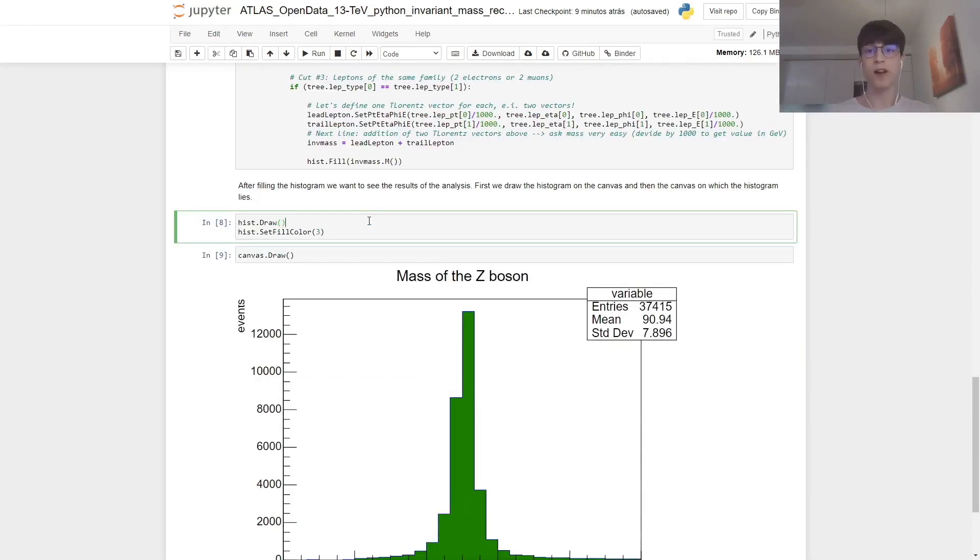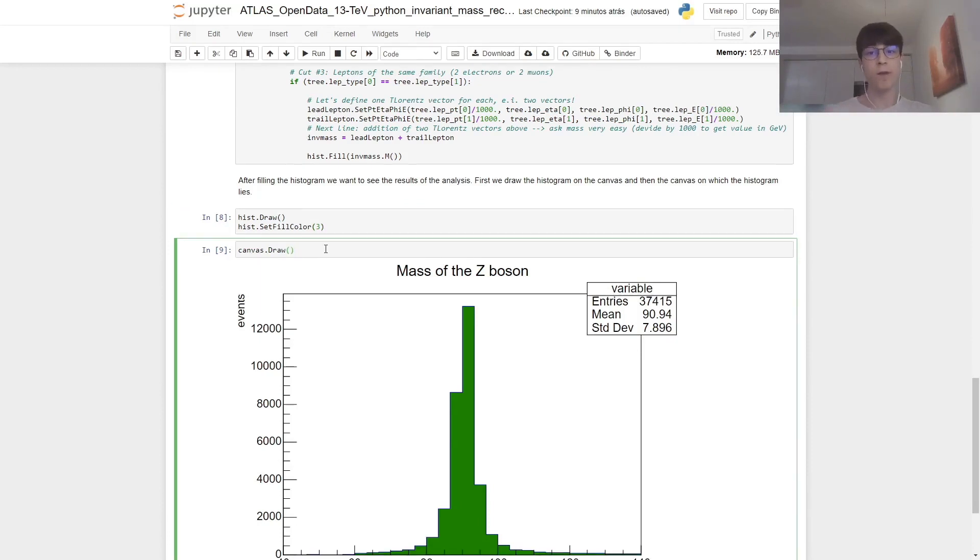To actually plot our chart, we need to do hist.Draw, then let's set the color to be something like green. So we do hist.SetFillColor(3). And also, remember that the histogram and any other plots are dependent on the canvas, so we do canvas.Draw as well.